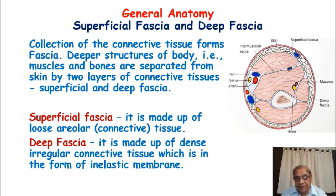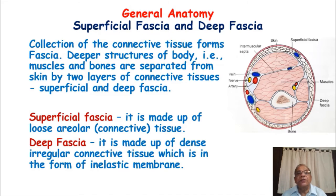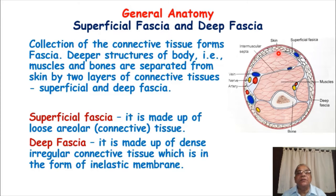As I am referring to the terms superficial and deep fascia, naturally the question must be arising in your mind: what is the meaning of fascia? Fascia means it is nothing but the collection of connective tissue. Connective tissues are the basic tissues of the body, and both superficial and deep fascia are formed by connective tissue. Looking at this diagram — a cross section of the limb — deep to the skin, the first layer is the superficial fascia, and deep to it is the deep fascia, which is a thin fibrous membranous structure.